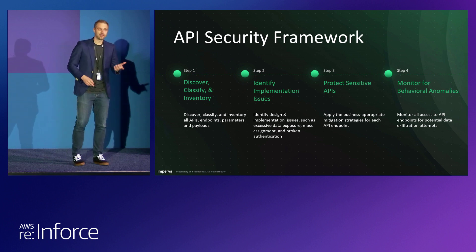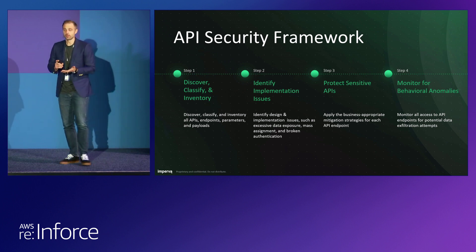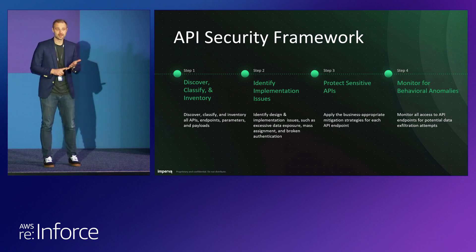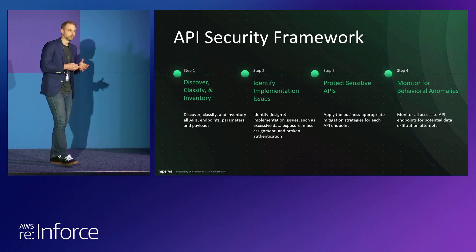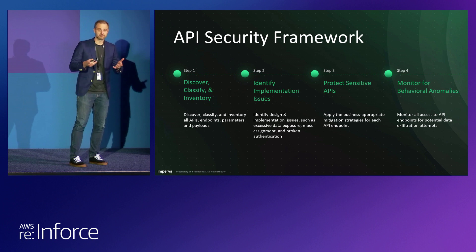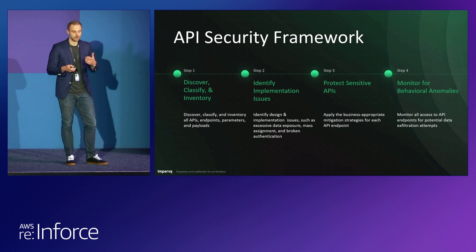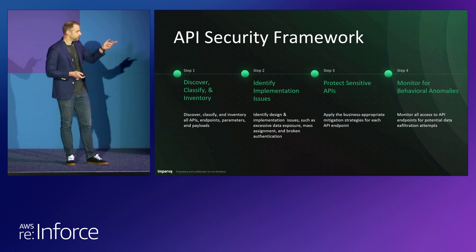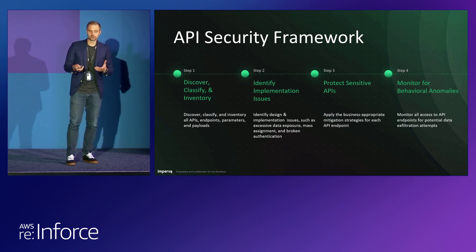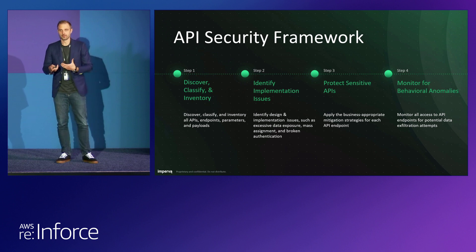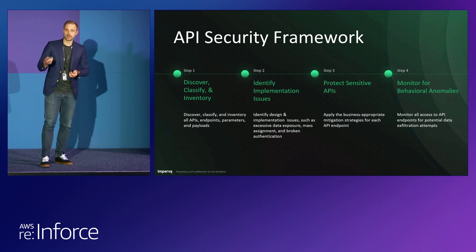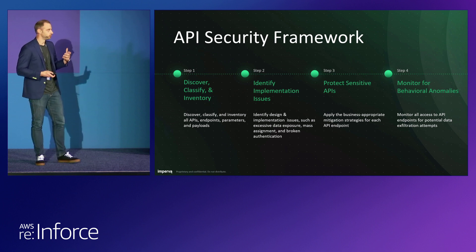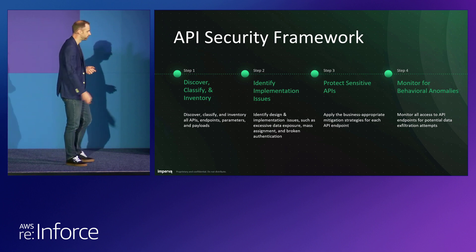The second step is to identify implementation issues — things like unauthenticated API endpoints that return sensitive data. It's an obvious one, but some of the larger data breaches were doing exactly that. Identifying where authentication and authorization headers are present is really that first step. Next, we want to protect sensitive APIs by understanding what data is going across those endpoints and what controls we can place. And last, look for behavioral anomalies — access patterns that deviate from what your users are normally doing.